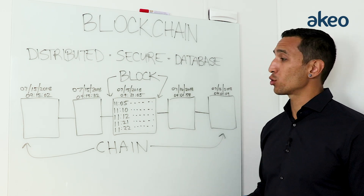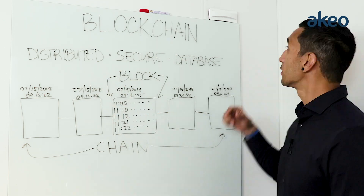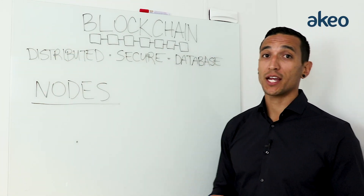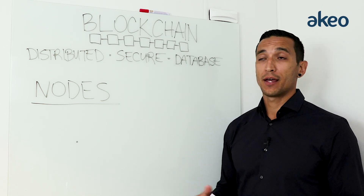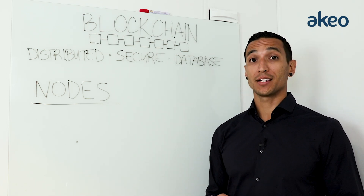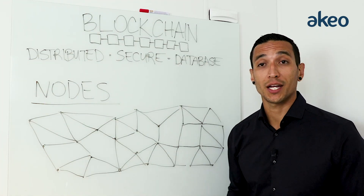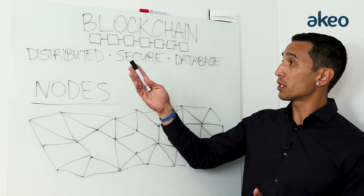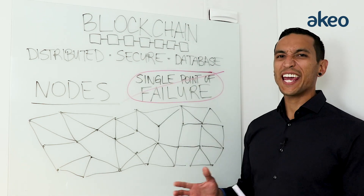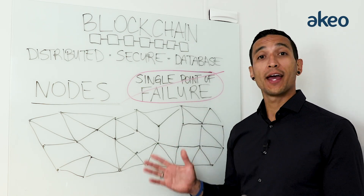No one person or entity controls this database. Instead, it's distributed among what are called nodes. Nodes are essentially a live copy of the blockchain sitting on a computer that's connected to the network. A blockchain is distributed among hundreds, thousands, or potentially millions of nodes. Because it's distributed or decentralized, there's no single point of failure. You can't hack every node at once — these are computers placed all over the world and it's just not feasible.